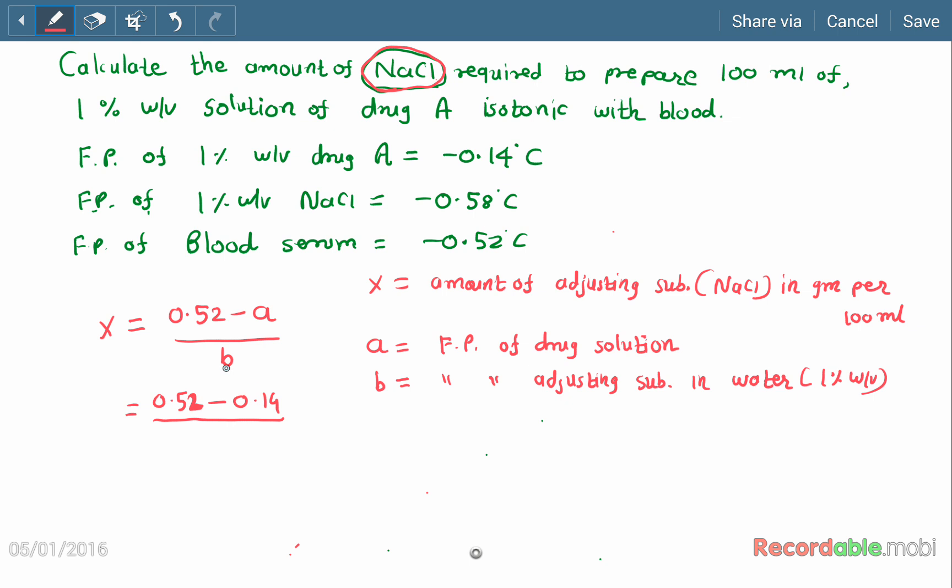b is the freezing point of the adjusting substance in water. Here it is 0.58, the freezing point of 1% weight by volume of sodium chloride. Now we get the answer: 0.38 / 0.58 = 0.655, which is equal to 0.66 grams of sodium chloride per 100 ml of solution.